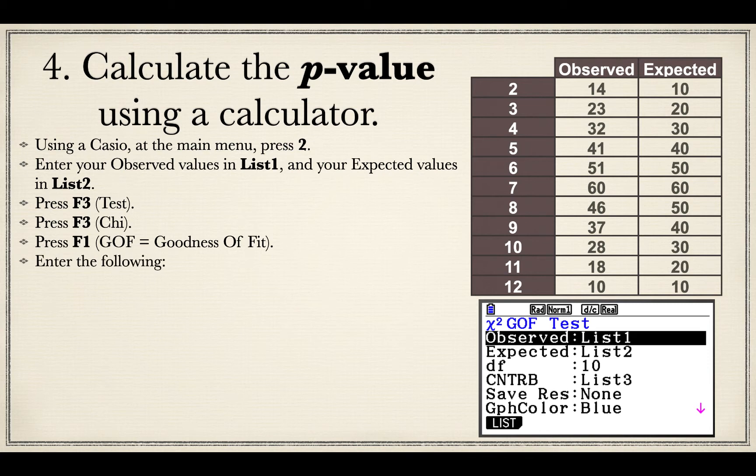And so now it's asking me for where is my observed list? Well, that's in list 1. And where is the expected list? That's in list 2. The degrees of freedom is 10 because remember, degrees of freedom is basically the number of rows in your table minus 1 times the number of columns in your table minus 1. Well, I have two columns and 11 rows. So 11 minus 1 times 2 minus 1 is 10.